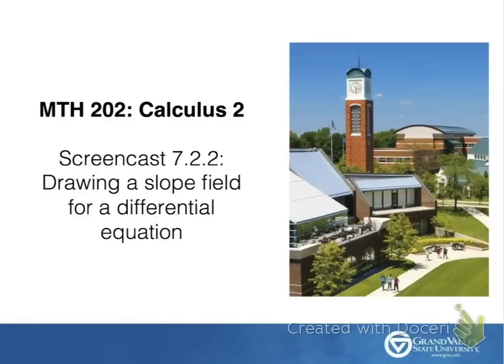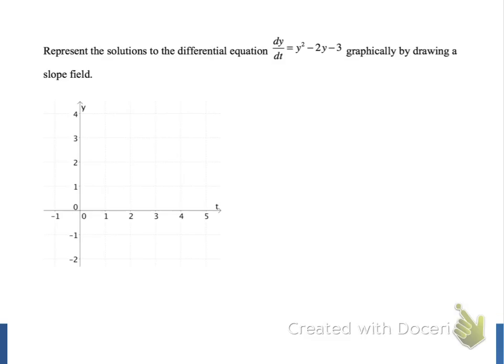Hello, and welcome to this screencast. In this screencast, we will draw an example of a slope field for a differential equation. In this example, we have the differential equation dy/dt is equal to y squared minus 2y minus 3. A solution to this differential equation is a function y of t, such that when we differentiate that function y, the result we get is our original function squared minus 2 times our function minus 3 — so we get y squared minus 2y minus 3.